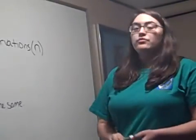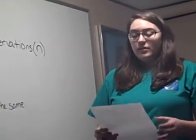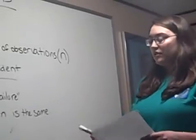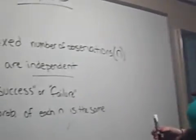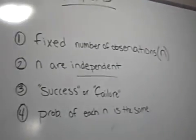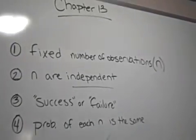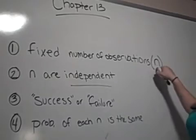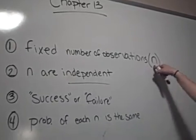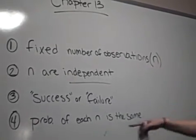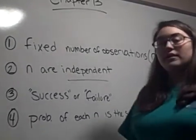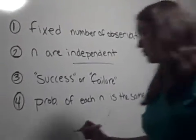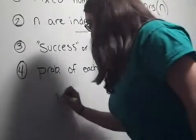Those are the four things to keep in mind before you can apply any of the binomial distributions. Observations are abbreviated with the letter N, and the probability of success is abbreviated with P.